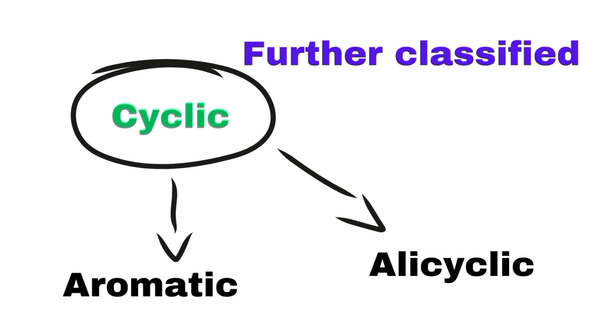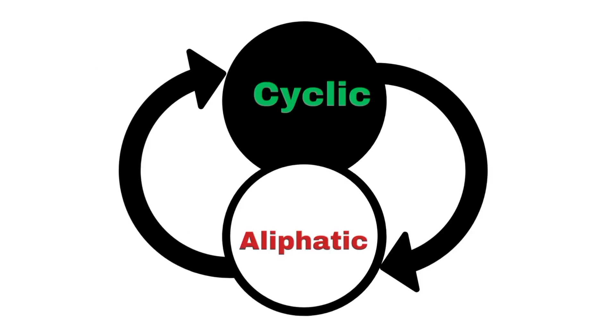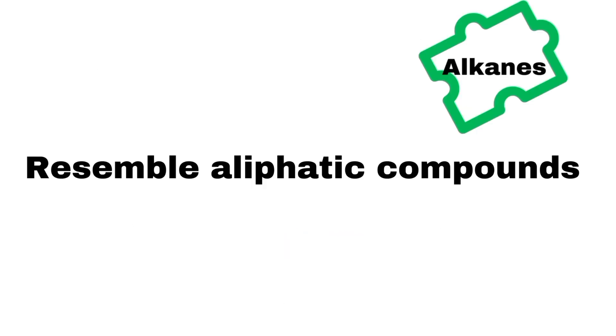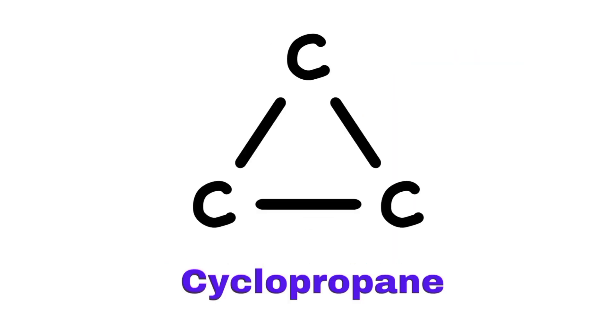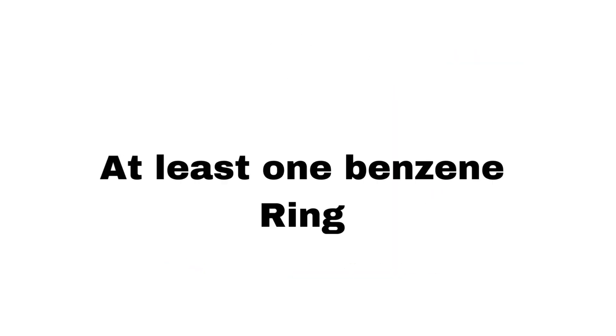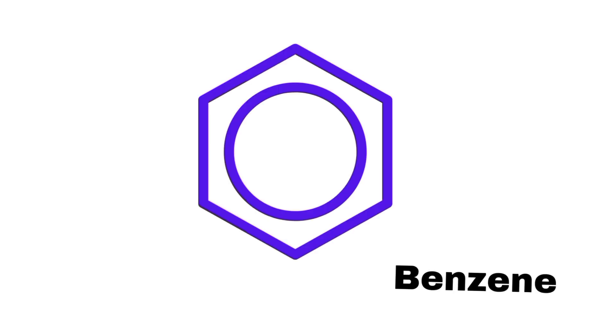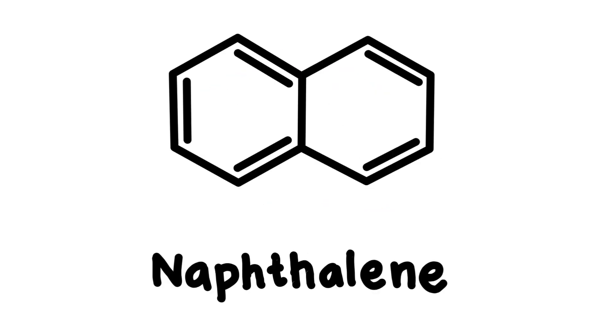Closed-chain compounds are further classified into two categories: alicyclic compounds and aromatic compounds. Those cyclic compounds that resemble aliphatic compounds in their properties are called alicyclic; examples include cyclohexane and cyclopropane. Aromatic compounds are those that contain at least one benzene ring in their structure, with common examples being benzene and naphthalene.